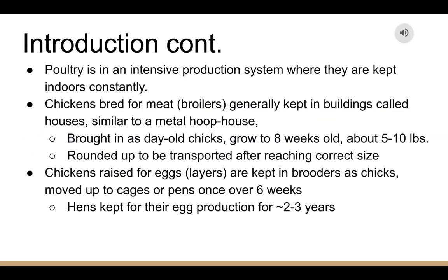Poultry is an intensive production system where they are kept indoors constantly. Broilers are chickens bred for meat that are kept in buildings called houses. They are brought in as day-old chickens, grow to eight weeks old, and weigh about five to ten pounds, then are all gathered up to be transported after reaching the correct size. Chickens called layers are raised for eggs and are kept in brooders as chicks and eventually moved to cages or pens once they are over six weeks old. Pens are then kept for egg production for two to three years.